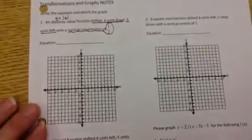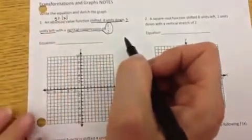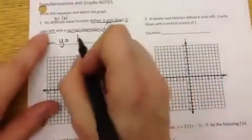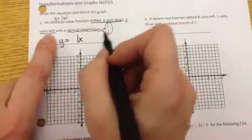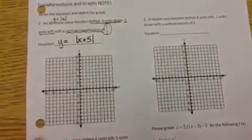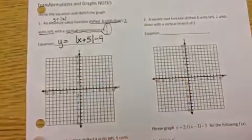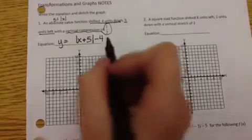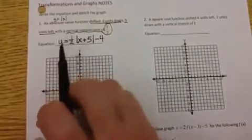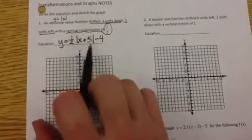In my absolute value function, I know my shifts left and right have to go inside with the absolute value of x. So I'm going to start with y equals the absolute value of x, shifting 5 left means I have to add 5 inside the absolute value. Then shifting down means I'm subtracting a number at the end, and the vertical compression is the number multiplied out in front — 1 half. So my equation is y equals 1 half times the absolute value of x plus 5, minus 4.